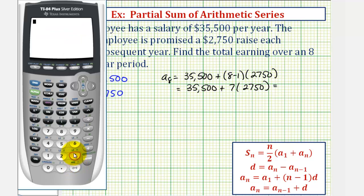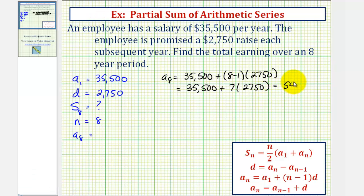35,500 plus seven times 2,750 gives us a sub eight, which is 54,750. This would be the salary during the eighth year.